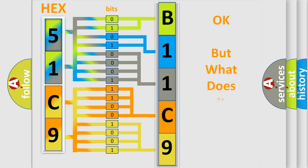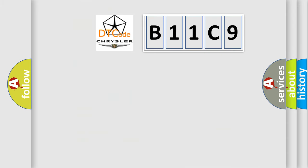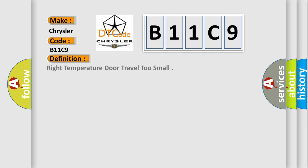The number itself does not make sense if we cannot assign information about what it actually expresses. So, what does the diagnostic trouble code B11C9 interpret specifically for Chrysler car manufacturers? The basic definition is: Right temperature door travel too small.